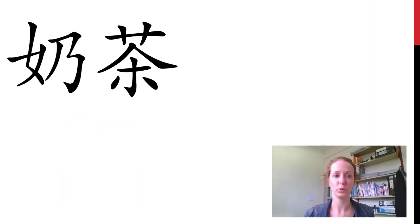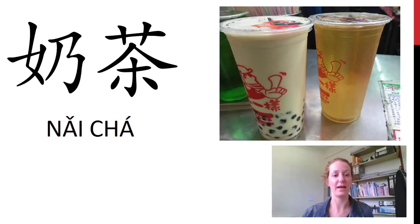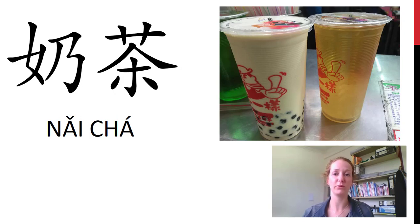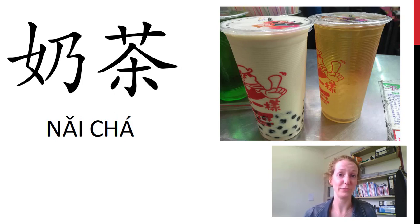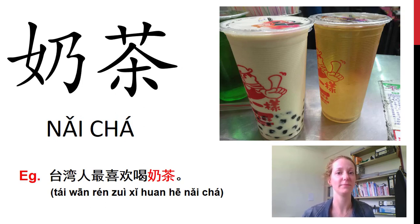这是什么? Two things we know join together. On the left side 奶 and the right side 茶 — milk tea. In Taiwan, this is one of their favorite drinks, milk tea. 台湾人最喜欢喝奶茶.